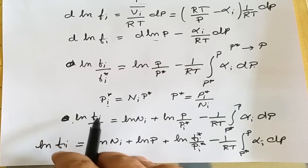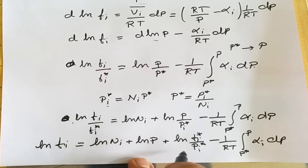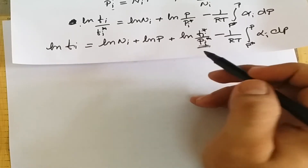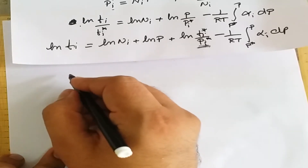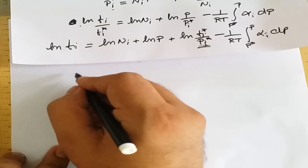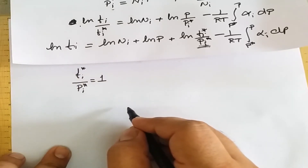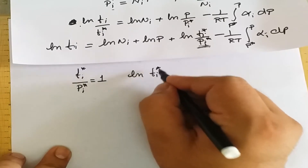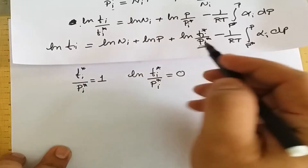We can rearrange to identify the term ln(f_i*/p_i*). Since p* is very low pressure and can be virtually taken as zero, at very low pressure all gases behave ideally. According to the definition of fugacity, f_i*/p_i* can be taken as unity, and therefore ln(f_i*/p_i*) equals zero, since ln(1) = 0.